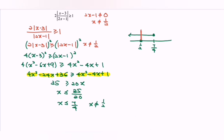So the answer is negative infinity to 1/2, union 1/2 to 7/4, where 1/2 is not included. In interval notation: (-∞, 1/2) ∪ (1/2, 7/4].